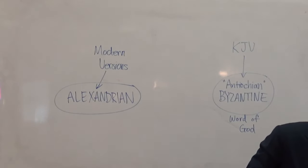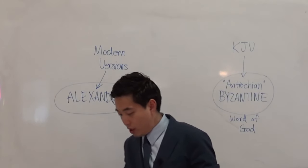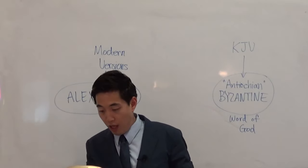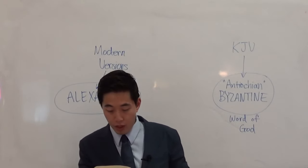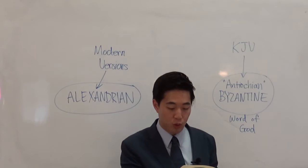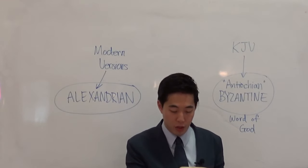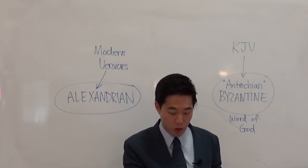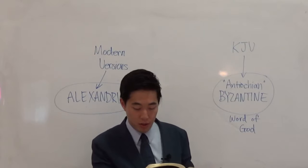Acts chapter 11 shows where the Word of God came from. Verse 21 says the hand of the Lord was with them and a great number believed and turned unto the Lord. Verse 23 says when he came and had seen the grace of God, he was glad and exhorted them all, that with purpose of heart they would cleave unto the Lord.